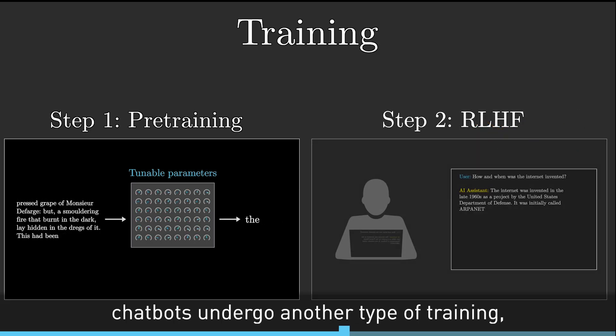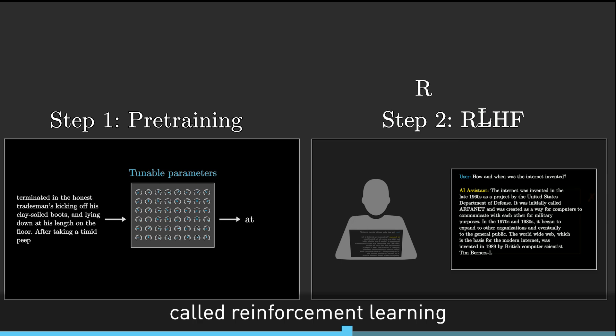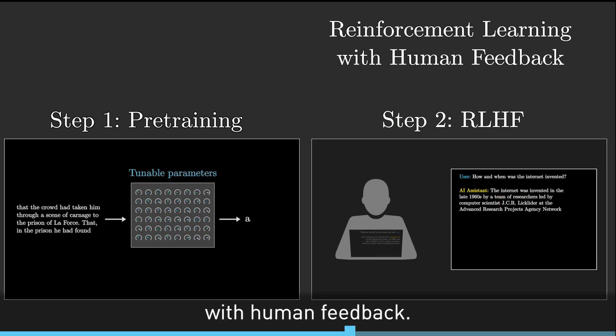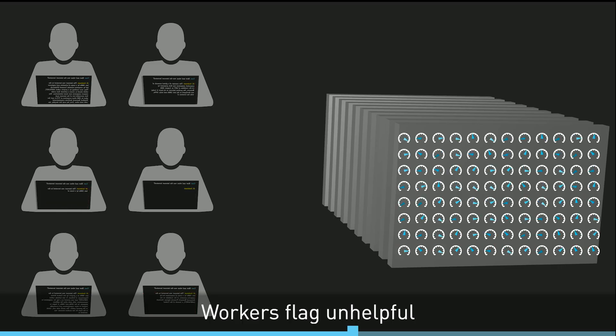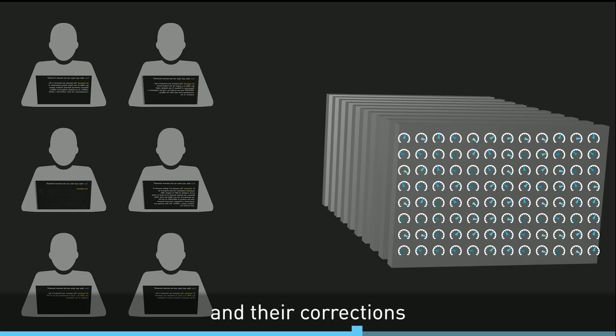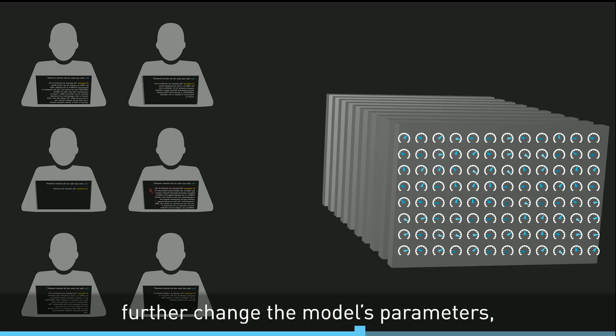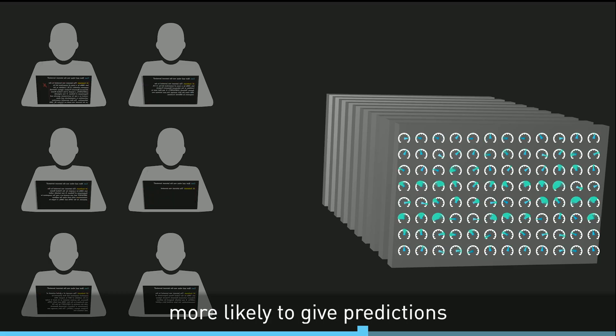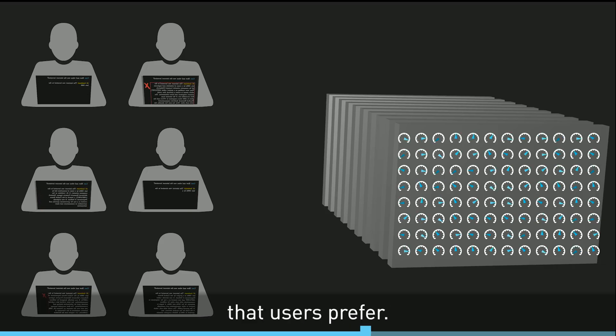Workers flag unhelpful or problematic predictions, and their corrections further change the model's parameters, making them more likely to give predictions that users prefer.